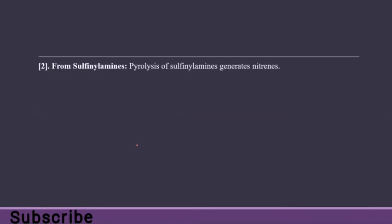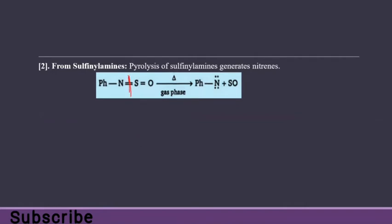From sulfenyl amines: pyrolysis of sulfenyl amines generates nitrines. In the gas phase, we can remove SO from sulfenyl amines, and then we have our final product — nitrines — with nitrogen attached to another molecule, one covalent bond and four non-bonded valence electrons.